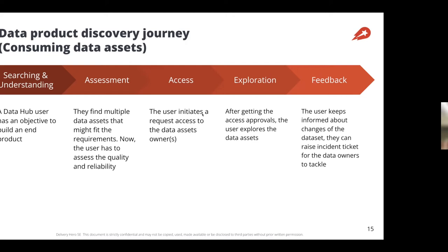Third is access. After finding three or four datasets of interest to build your product, you request access. As mentioned, in the data mesh, data governance is distributed by default, so you request access from the owner of those datasets.